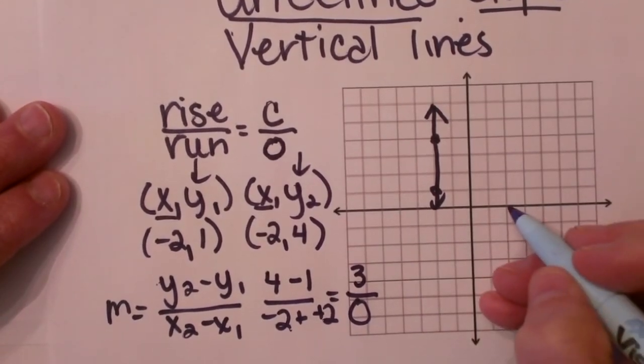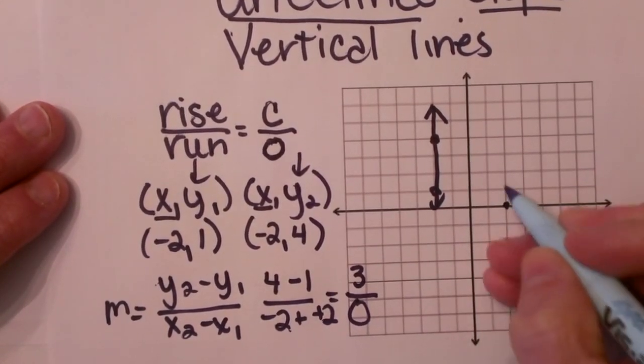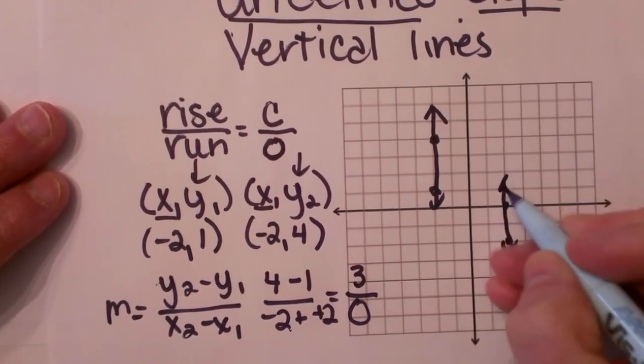So there you go, that is how you find a vertical line. So vertical lines have undefined slope.